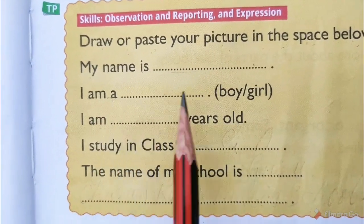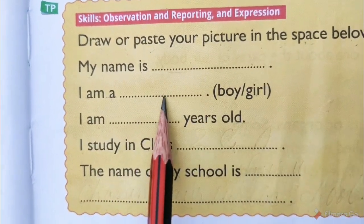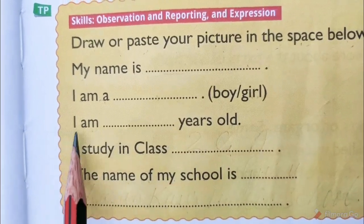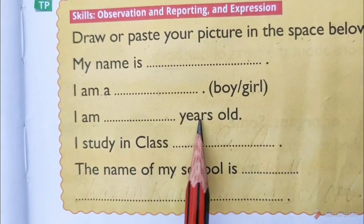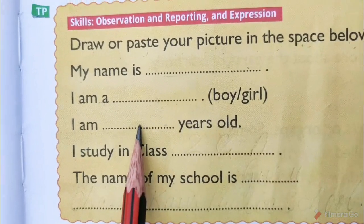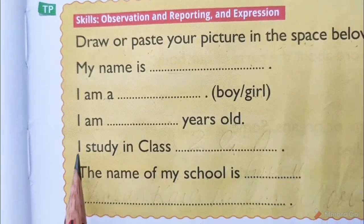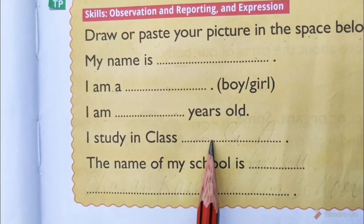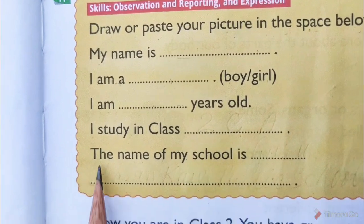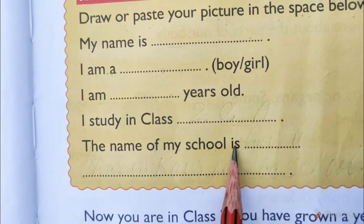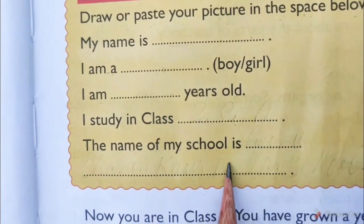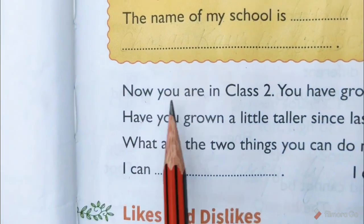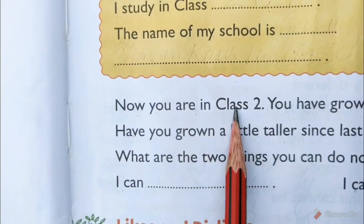I am a — write here your gender — boy or girl. I am dash years old — write here your age. I study in class — write here your class. The name of my school is — write here your school's name. Now you are in class 2.